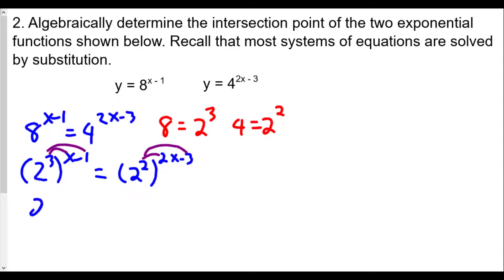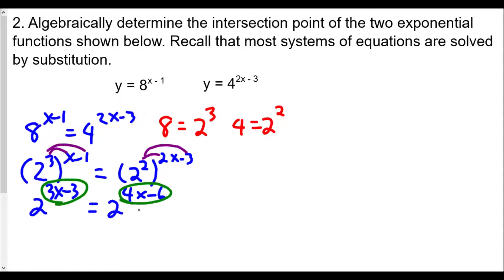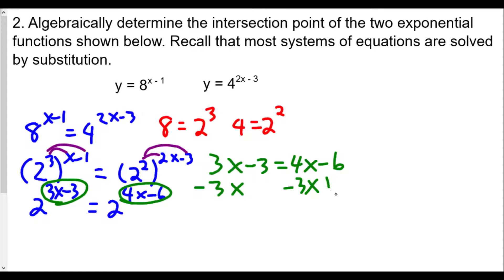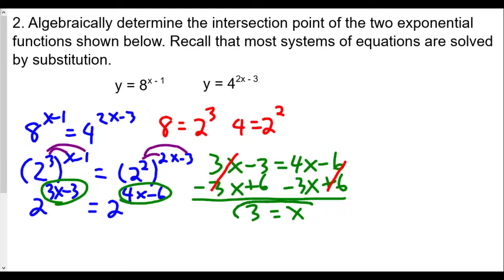We'll have 2 to the (3x minus 3) equals 2 to the (4x minus 6). Since the left side and right side have equal bases, we set the exponents equal to each other, giving us 3x minus 3 equals 4x minus 6. Subtracting 3x from both sides and adding 6 to both sides, the 3x cancels on the left and the 6 cancels on the right. Negative 3 plus 6 is positive 3, and 4x minus 3x gives x equals 3.